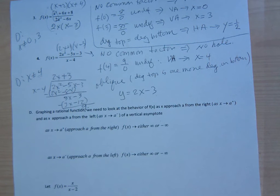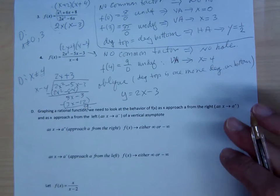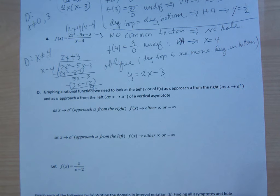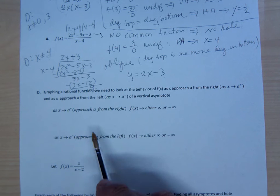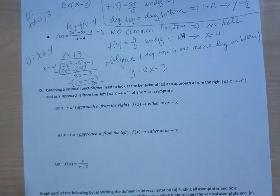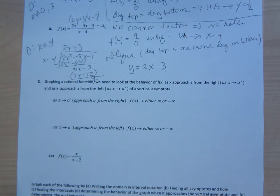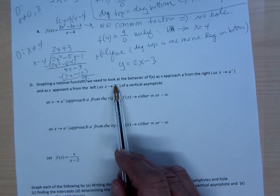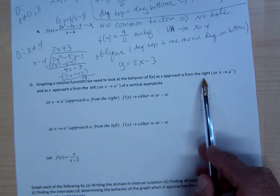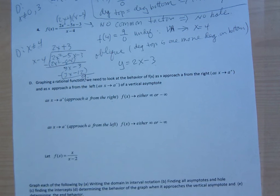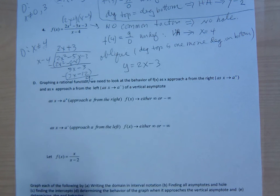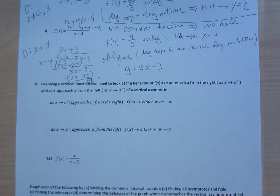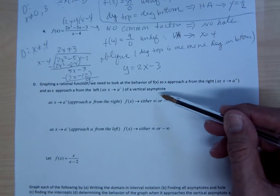We're going to almost wrap up graphing. To sketch the graph, you need to know what happens when your x value gets closer and closer to the vertical asymptote. There are only two possibilities coming from the right or from the left. Coming from the right, the y value is either positive or negative — so the curve is either pointing up or pointing down.